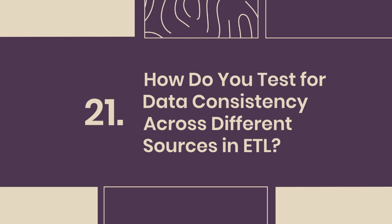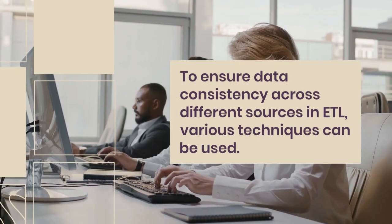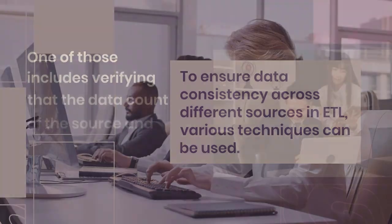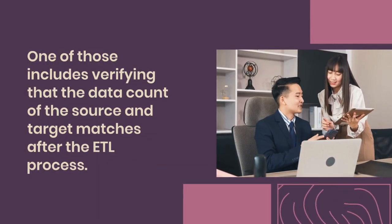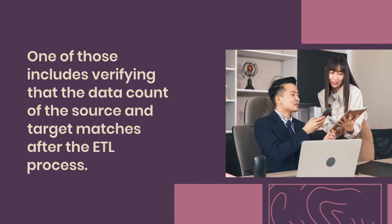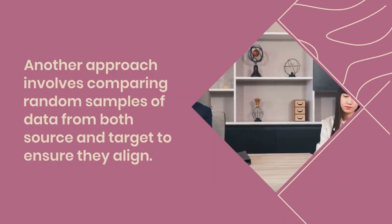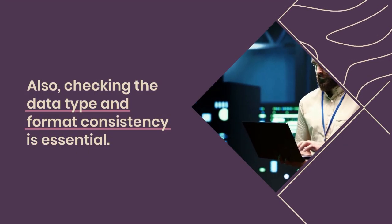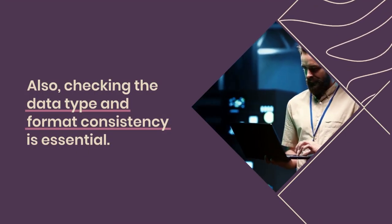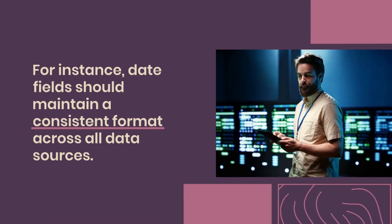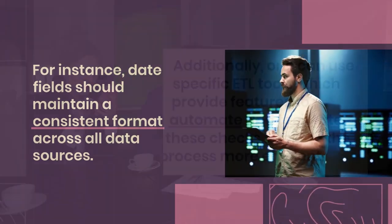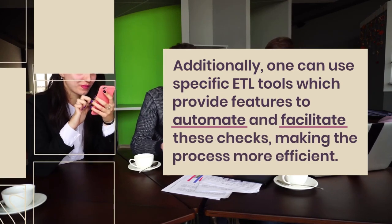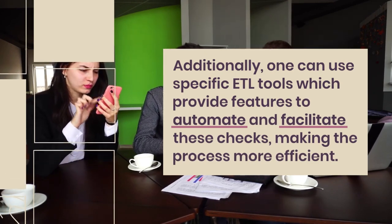Question 21: How do you test for data consistency across different sources in ETL? Various techniques can be used: verifying that data counts of source and target match after the ETL process; comparing random samples of data from both source and target to ensure alignment; checking data type and format consistency — for instance, date fields should maintain a consistent format across all data sources. Specific ETL tools can also automate and facilitate these checks, making the process more efficient.